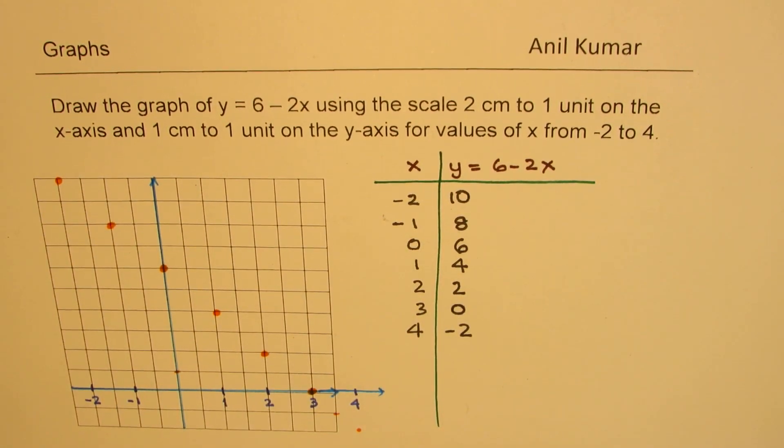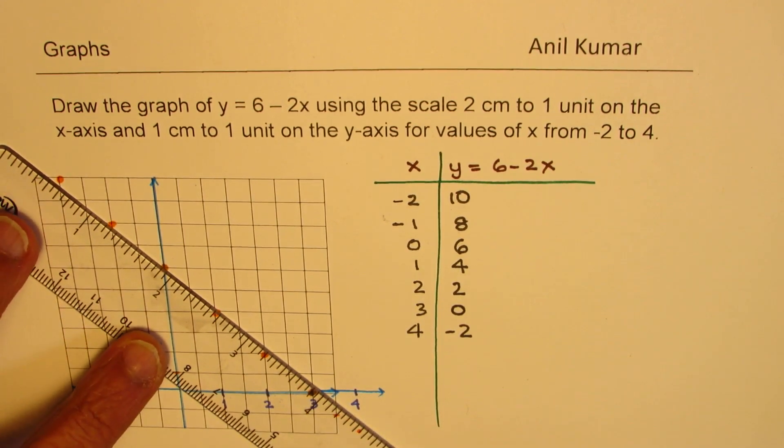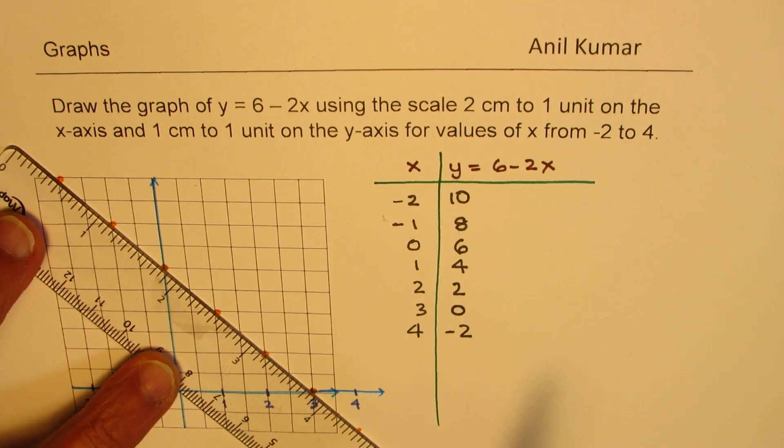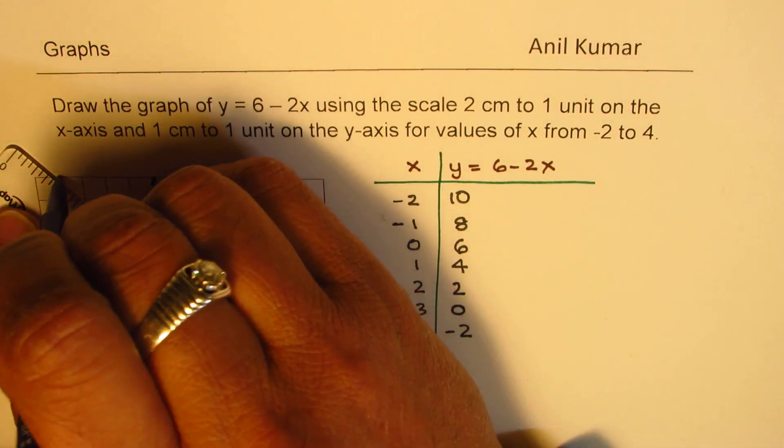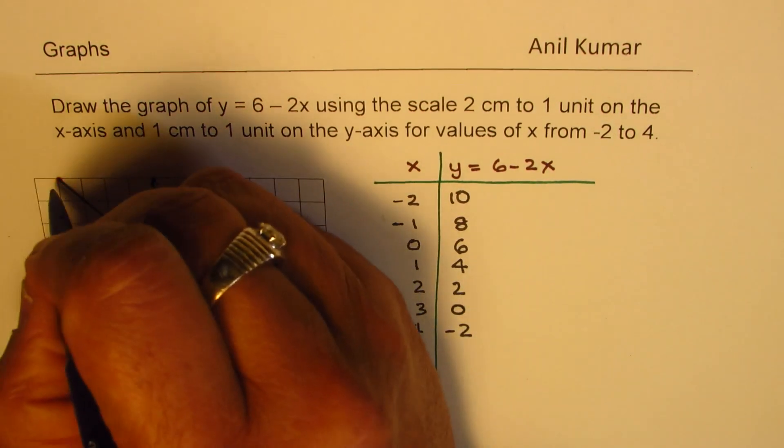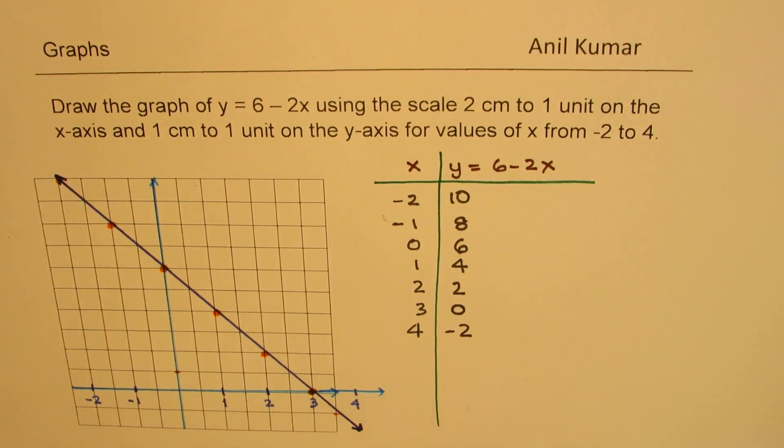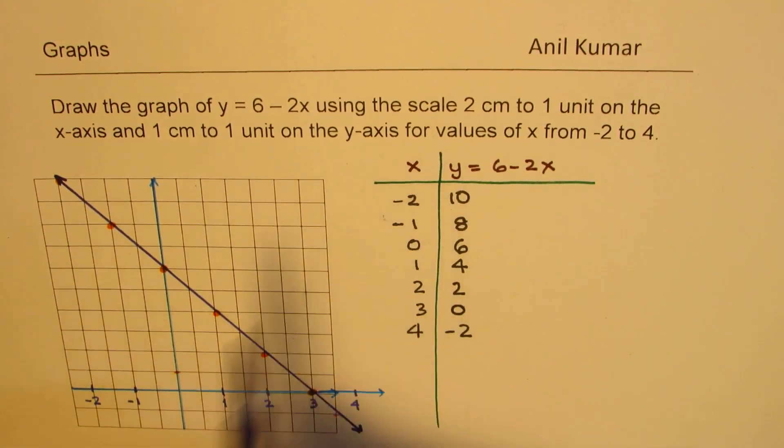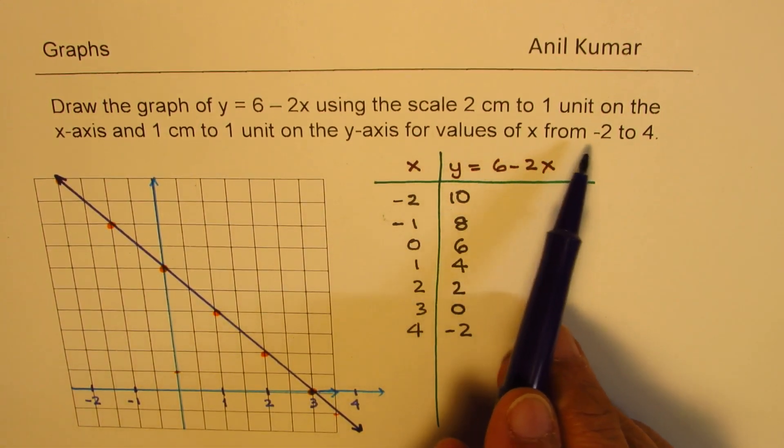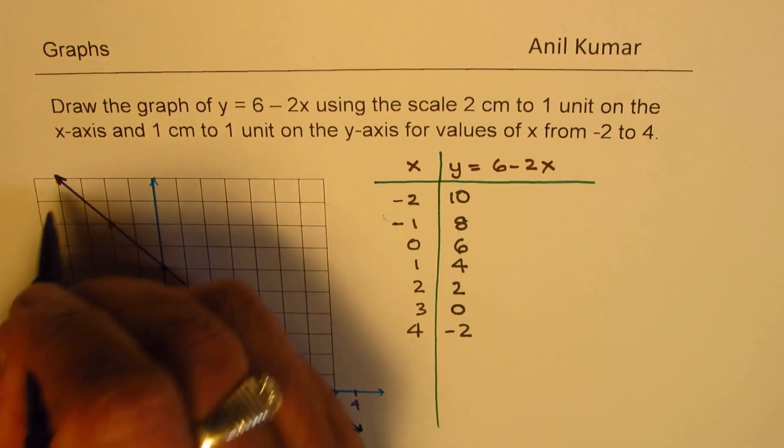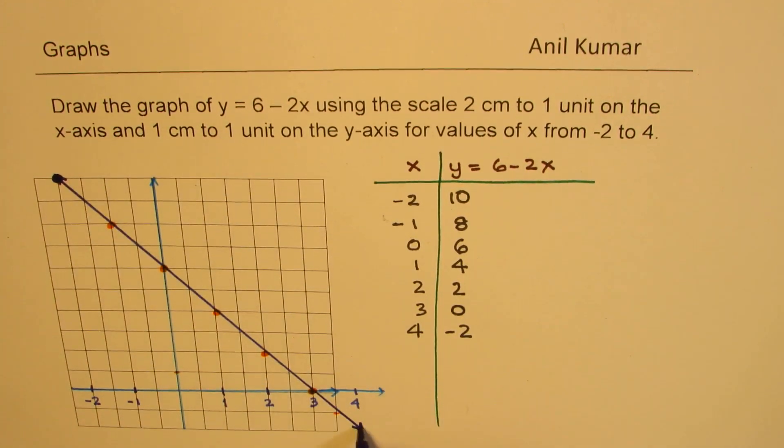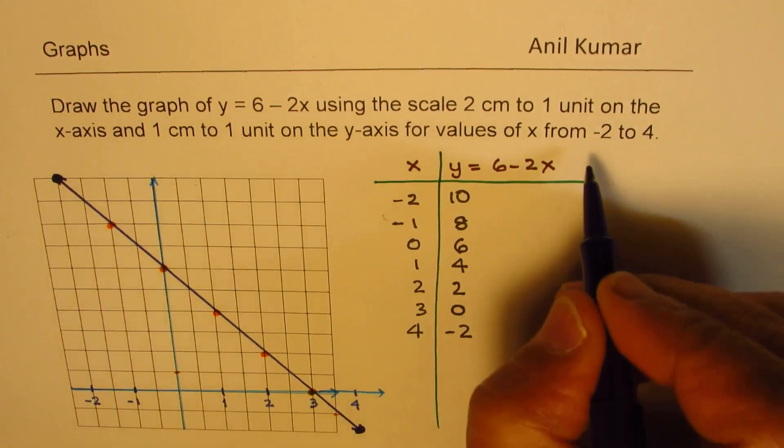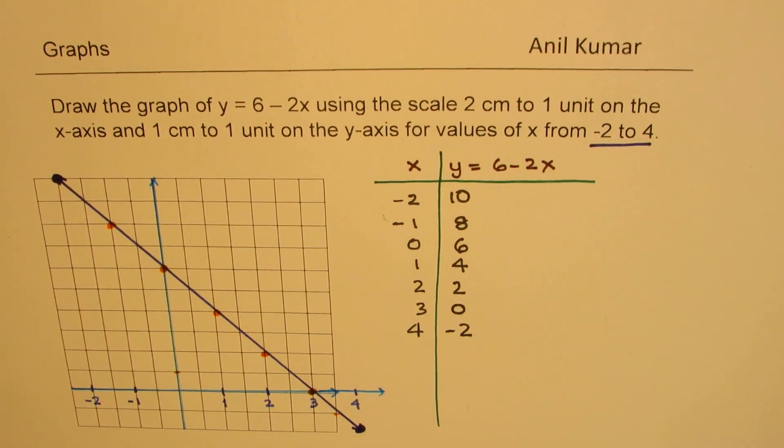So we get these points, which can be connected to sketch the graph of the given function, right? So we may draw arrows at the end to indicate that we could have taken more points. However, when we say that from the values of x from minus 2 to 4, in that case, we should actually make it an end point, right? So we should not draw arrows in that case, since we are given a restricted domain, which is from minus 2 to 4. Perfect. So within that domain, these are the points, and when you connect them, you get a straight line, as shown here. So that is how we could actually draw the graph.